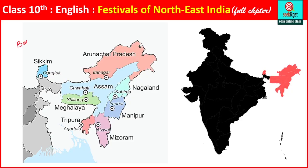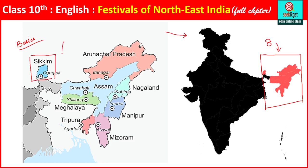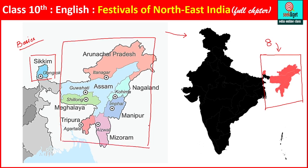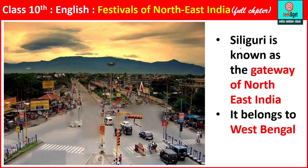First of all, we will know the basics of the Indian map. We will talk about the Land of Seven Sisters. Siliguri is a town known as the gateway of North East India.